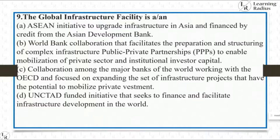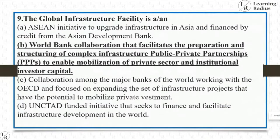Question on Global Infrastructure Facility — the four options were: (A) ASEAN initiative financed by ADB; (B) World Bank collaboration facilitating preparation and structuring of complex infrastructure public-private partnerships to enable mobilization of private sector and institutional investor capital; (C) collaboration among major banks working with OECD; (D) UNCTAD-funded initiative. The answer is B — World Bank collaboration.